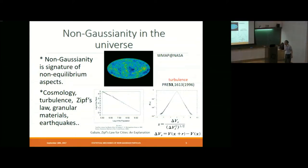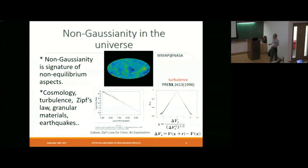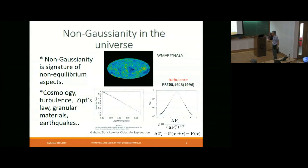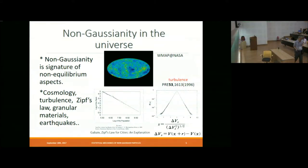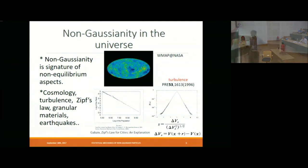For example, this is Zipf's law — a population ranking that satisfies a power law. So in this case, non-Gaussianity is very large. And this is an example obtained from turbulence as a velocity difference between two separated positions. The probability distribution of such velocity difference satisfies an exponential law. You can find a lot of examples like granular materials, earthquakes, galaxy systems, and other systems.